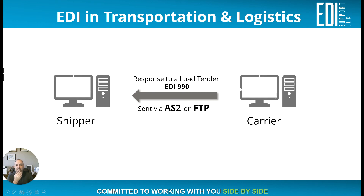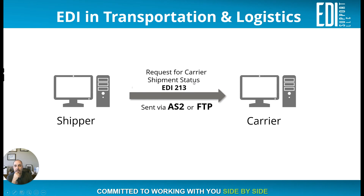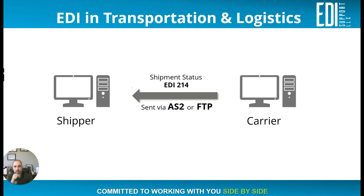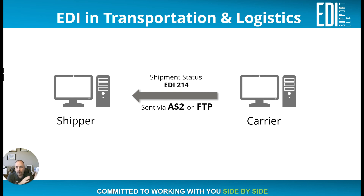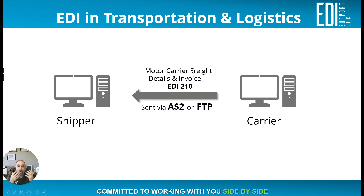In response, the carrier sends back a Response to a Load Tender — a 990 — saying they can take and deliver the product. Once the carrier has picked up the product and is moving it, the shipper can request a shipment status update. The carrier responds with an EDI 214 shipment status message. There can be multiple 214s along the delivery path — for example, every 24 hours or every hour, depending on the carrier's system.